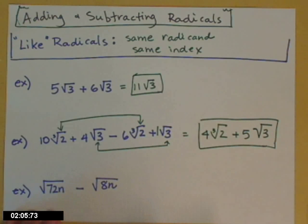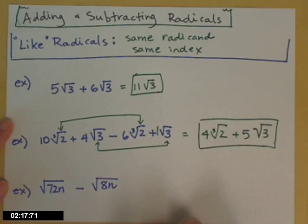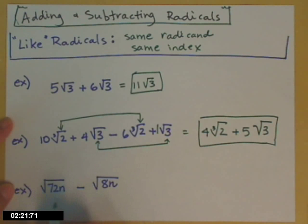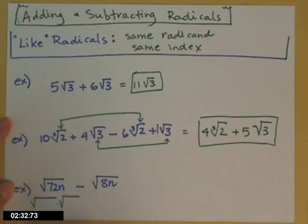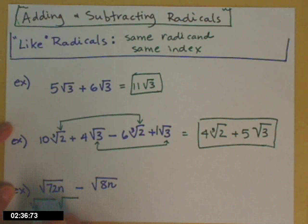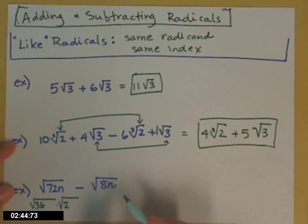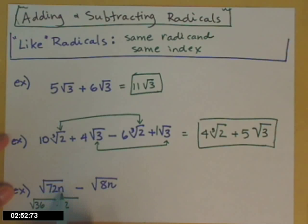Last example: 72 square roots of n minus 8 square roots of n. When we first see this, you might say you can't do anything because the radicands are different. But this is an algebra class, and I'm going to want you to simplify it to see if you can do something after that. Recalling how we simplify radicals — square root of 72n — we're going to think of a perfect square that goes into 72. 72 is 36 times 2, and you want to pick the pair with the largest perfect square factor. The n is not a perfect square factor since I'd need n squared to bring it out, so the n stays under the radical.